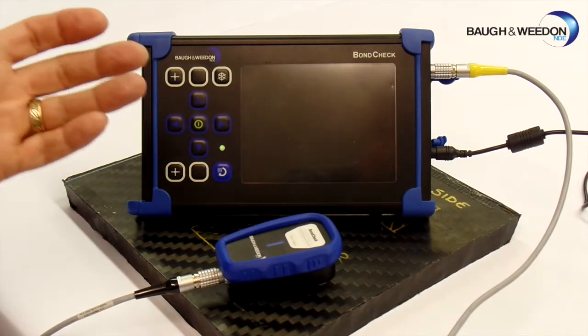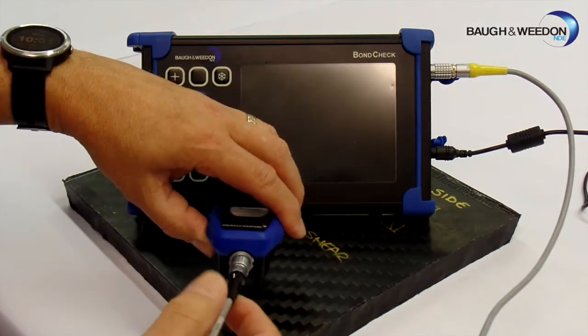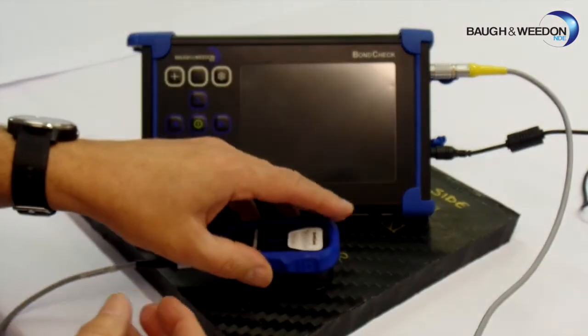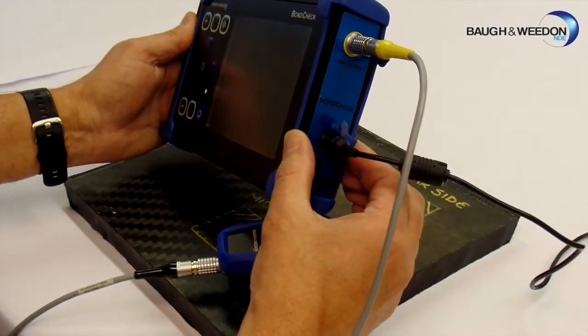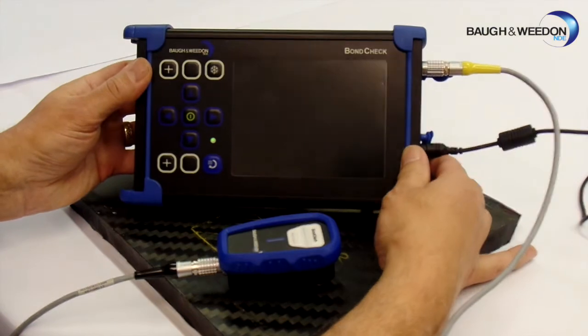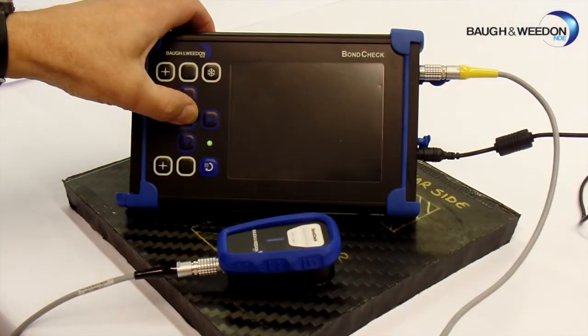The first thing we do is connect the probe up to the unit, so we will connect the silver end to the probe and we also connect the yellow end to the yellow socket on the unit. When we have done that we can turn the BondCheck on.